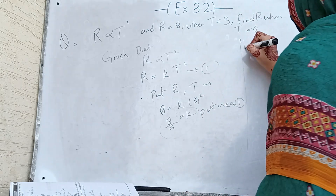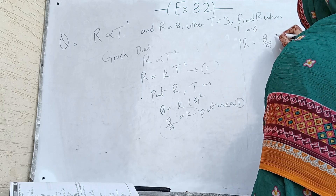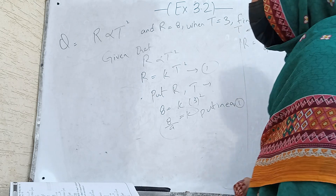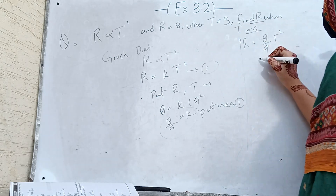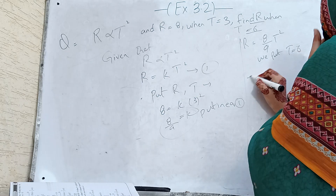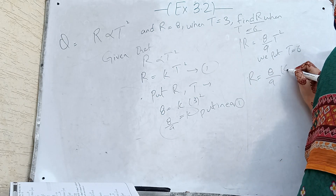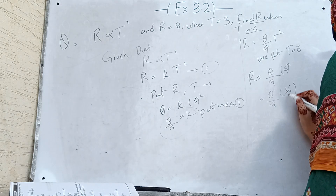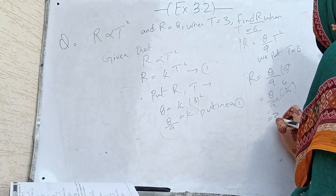We put k equal to 8 by 9 into equation 1: r equals (8/9)t squared. To find r when t equals 6, we substitute: r equals (8/9) times 6 squared, which is (8/9) times 36, which is equal to 32.